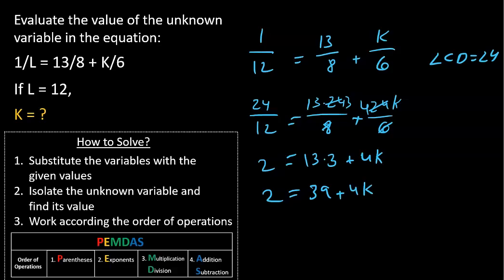Let's switch sides. 4k plus 39 equals 2. Minus 39. 4k equals minus 37.